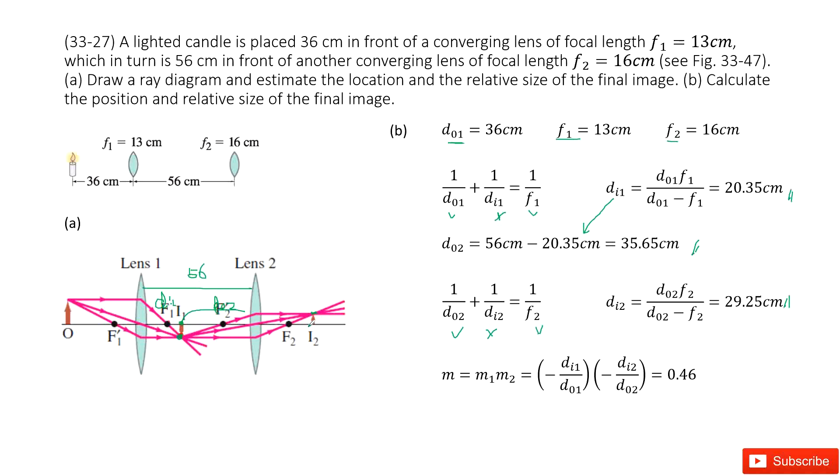Now we need to find the magnification for this system. So this is M1 times M2. M1 can be written in this term. M2 is this one. Input all the given quantities, and you get the answer there.